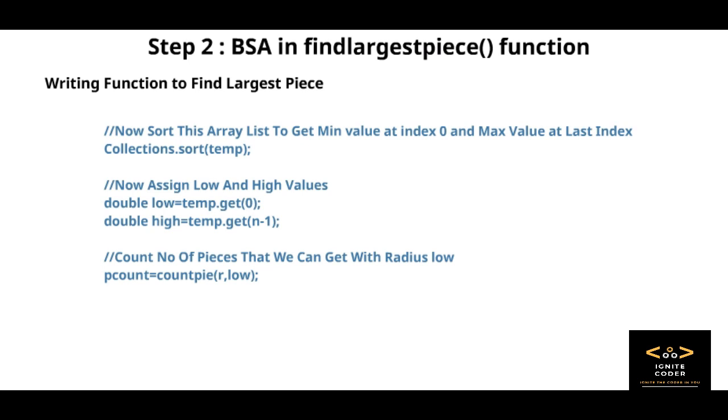So we take those two as low and high and we pass it to P count. What P count does is it counts the pieces that can be made for a radius. In R we have all radii and we are passing a low value, which means the first value. It will give us the final count.